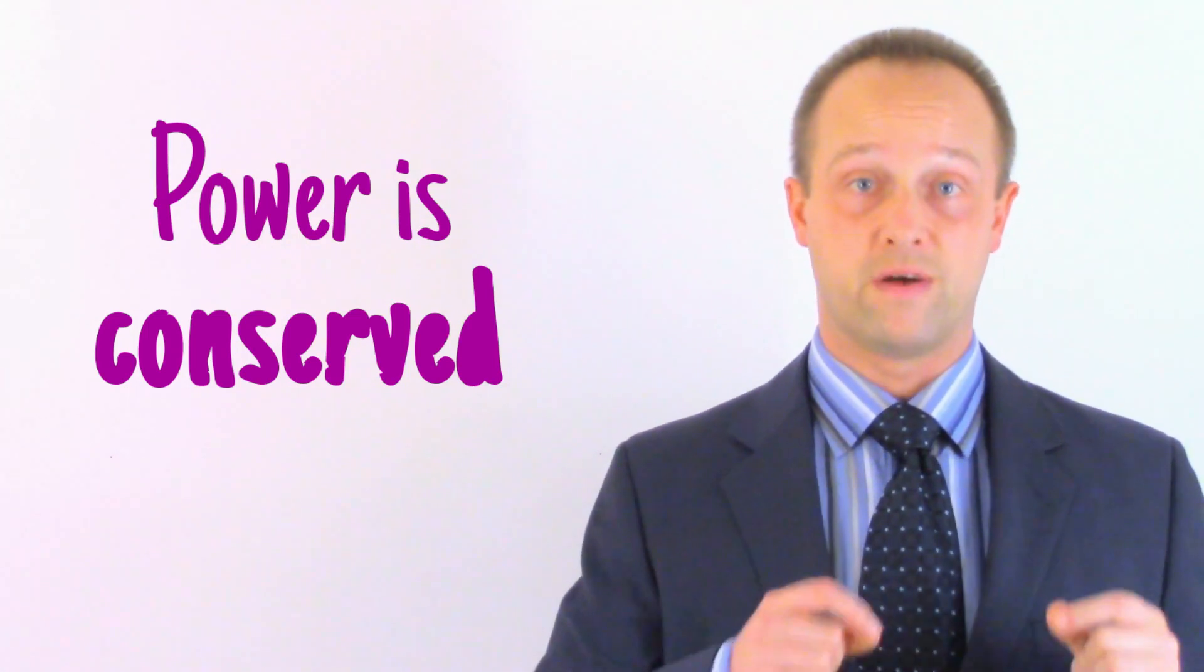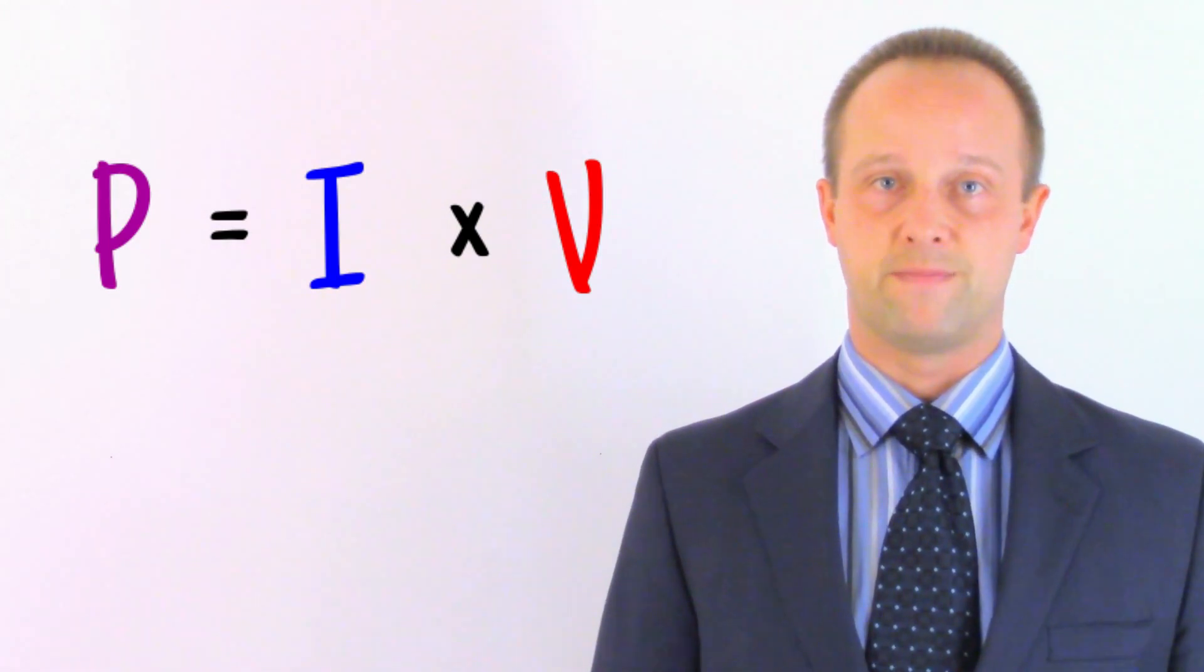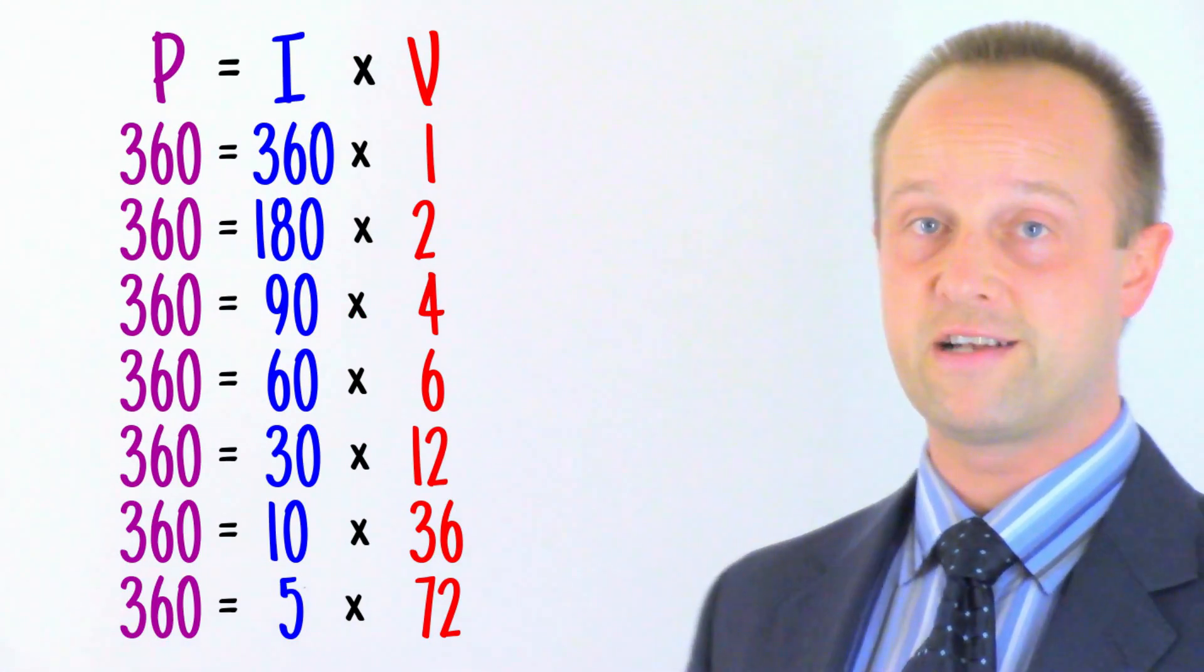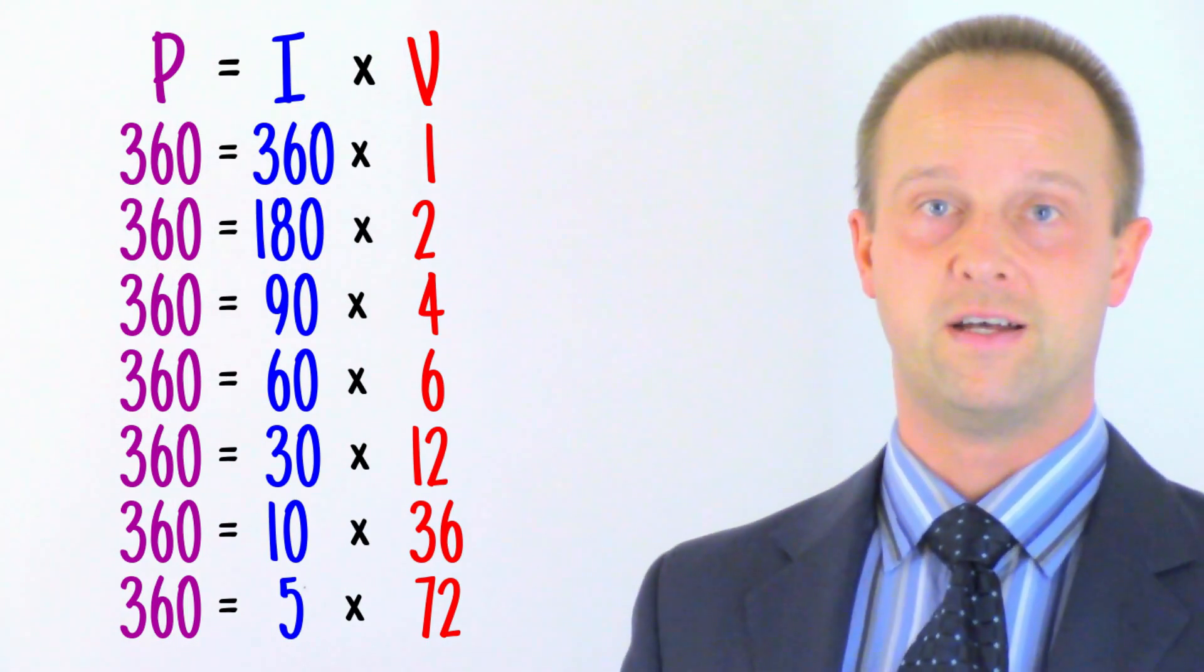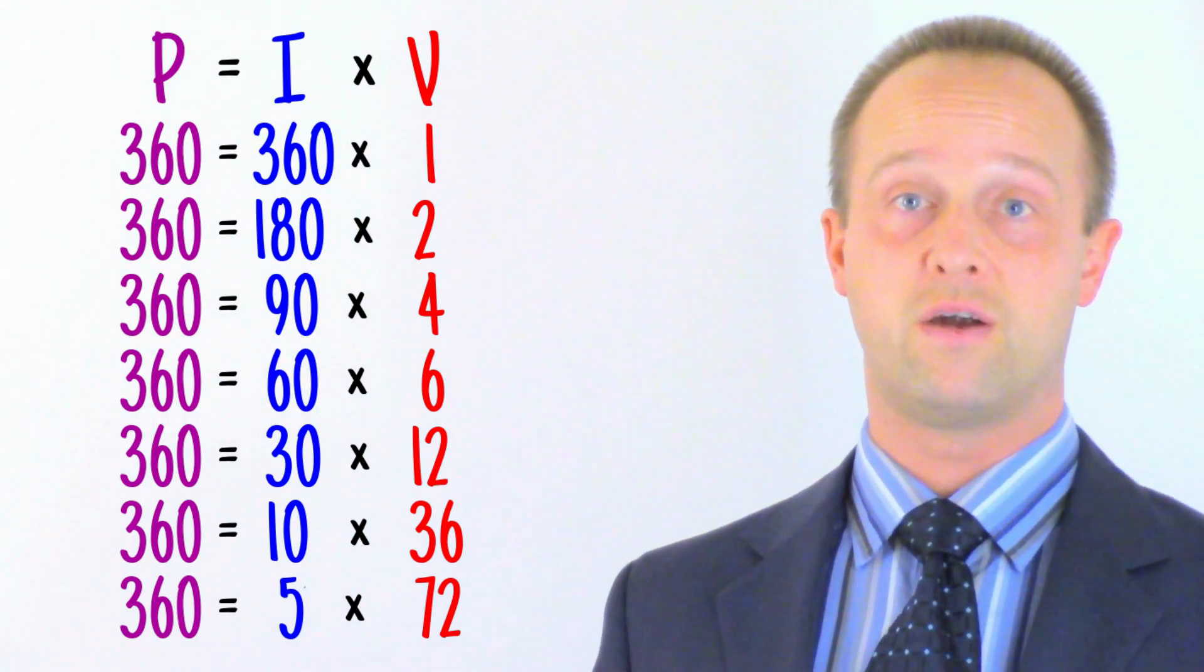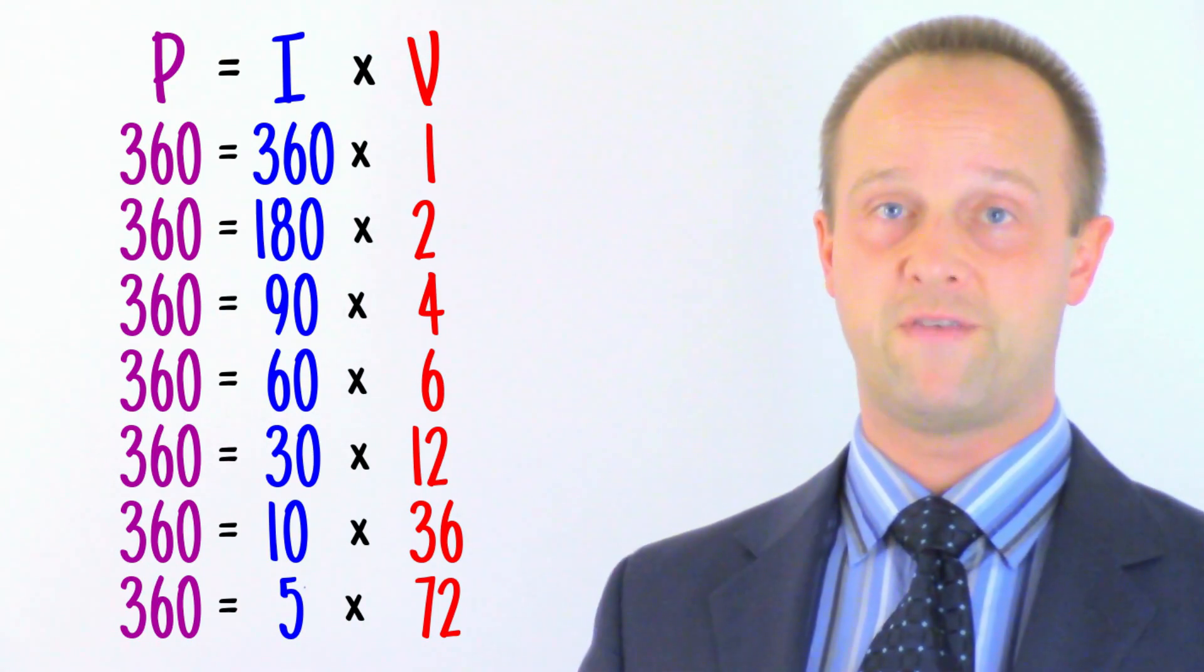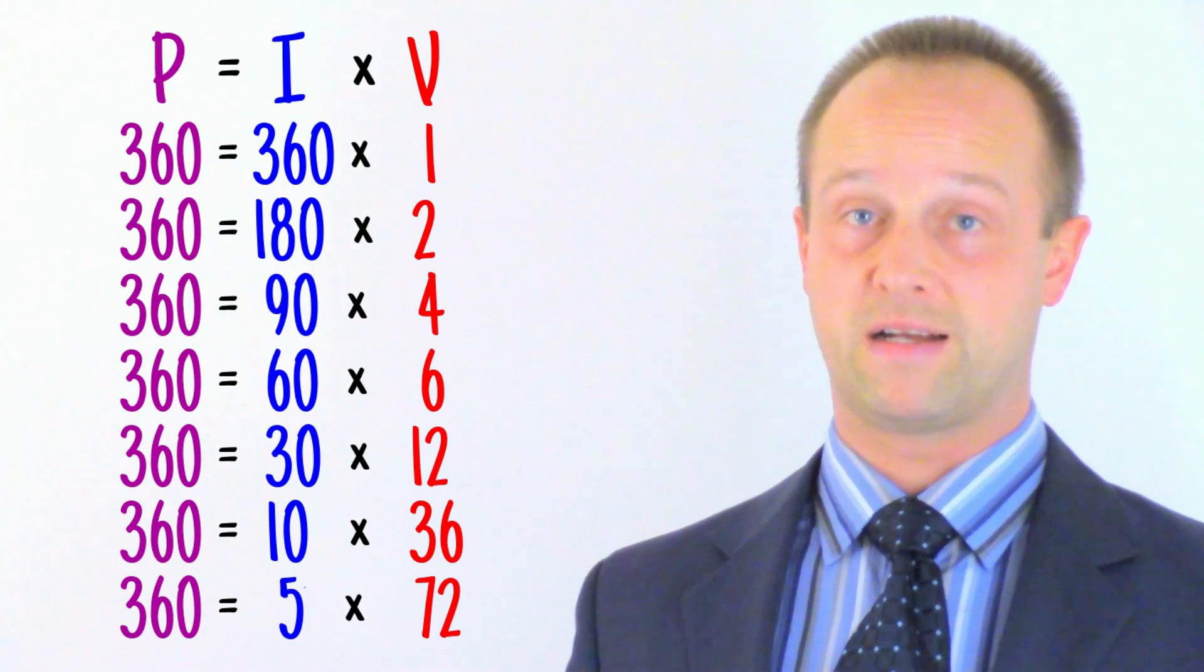P equals I multiplied by V. So look at these possible combinations of I and V, which give us 360. The key thing to notice here is that as the potential difference V increases, the current I decreases. This is exactly what we want. Doubling the potential difference which we transmit electricity at will halve the current, which will reduce the waste energy to a quarter of what it was originally. This is why we transmit at such high voltages. The system is much more efficient. Far less energy is wasted, and so we save money and use less resources and reduce the environmental impact of power generation.